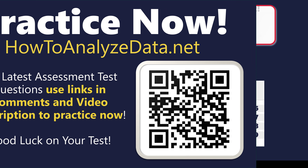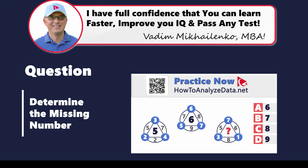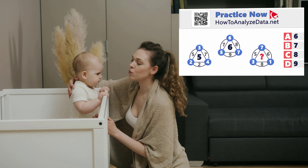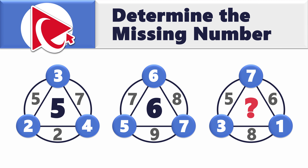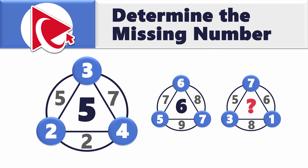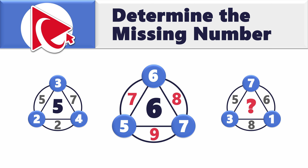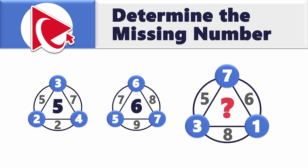You're presented with three shapes, each having circles and triangles with numbers inside and outside. The first shape has inside numbers 5, 7, 2; outside numbers 2, 3, 4; and middle number 5. The second shape has inside numbers 7, 8, 9; outside numbers 5, 6, 7; and middle number 6. The third shape has inside numbers 5, 6, 8; outside numbers 3, 7, 1; and the middle number is missing.